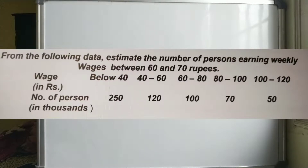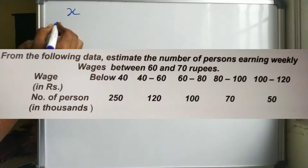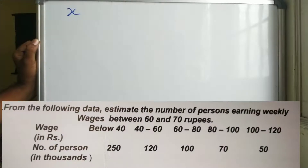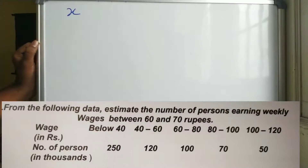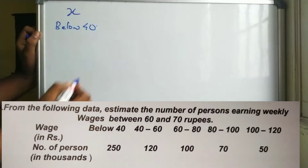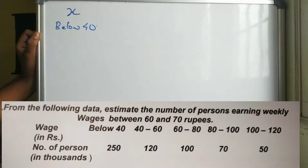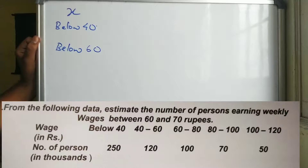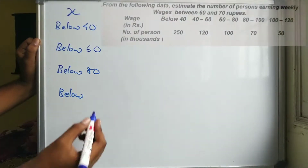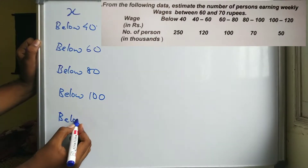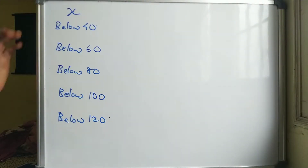We can form a table with x values. The intervals given are below 40, 40 to 60, 60 to 80, 80 to 100, and 100 to 120. We take x as the upper limit of each interval: below 40, below 60, below 80, below 100, and below 120.